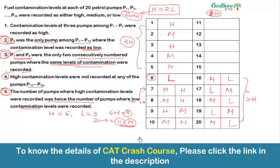Checking Case 2 for H = 6: from P1 to P10 we have five H values, needing only one more H among P11 to P15. That leaves four medium needed among P11 to P15, but we've shown only three M can fit there. Since four M is impossible, H = 6 cannot yield eleven medium pumps in either case, so H = 6 is ruled out.